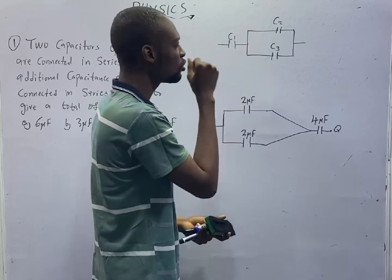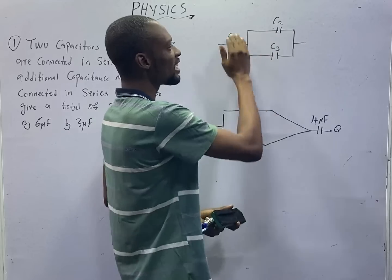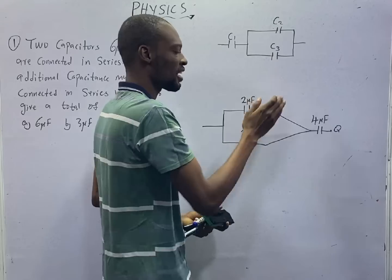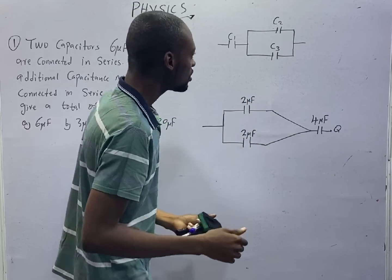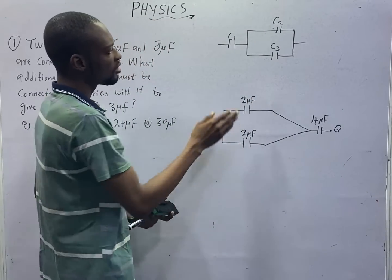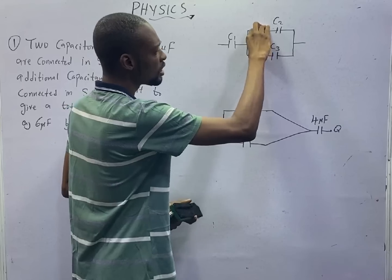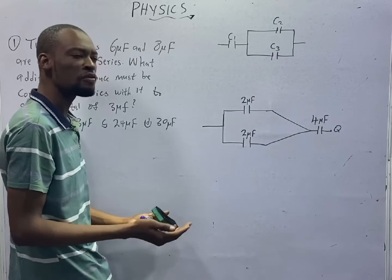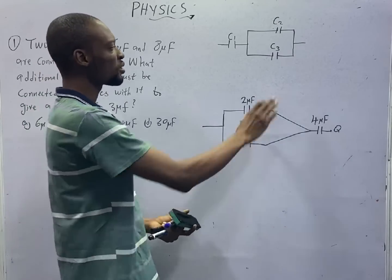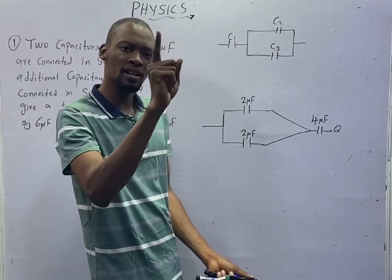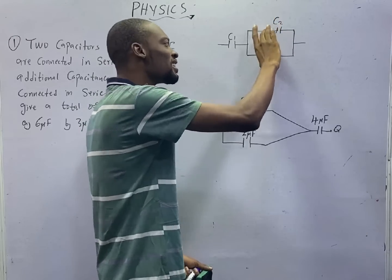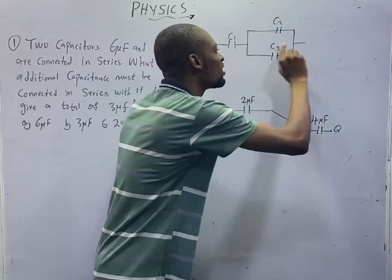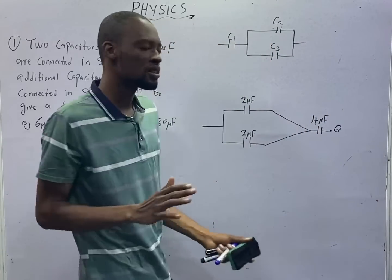Looking at this diagram, you obviously see that these two capacitors have a line separating them — one line, another line — so they are in parallel. Once you resolve these two, they will become in series with the other capacitor — they will be in the same straight line. Finding equivalent capacitance means you are resolving to a single number, and since it is the same line, they become in series.